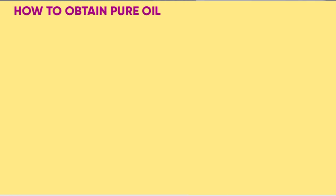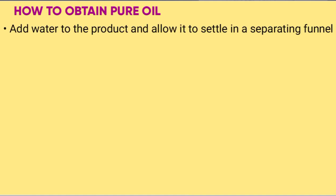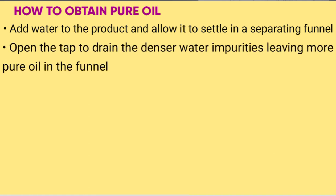To obtain pure oil, add water to the product and allow it to settle in a separating funnel. Open the tap to drain the denser water impurities, leaving pure oil in the funnel.